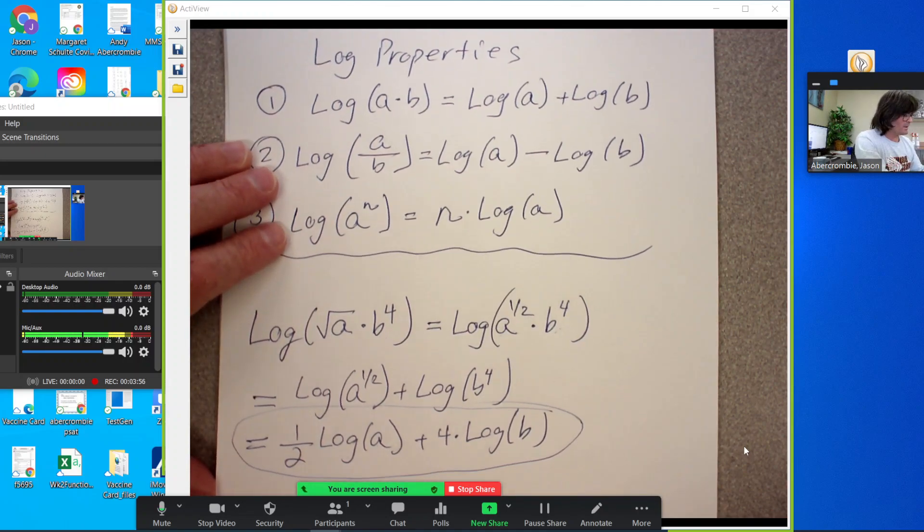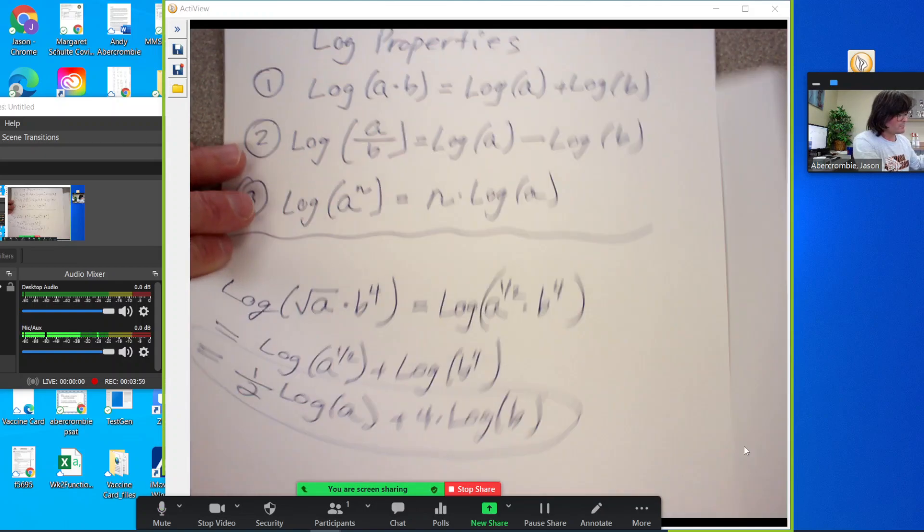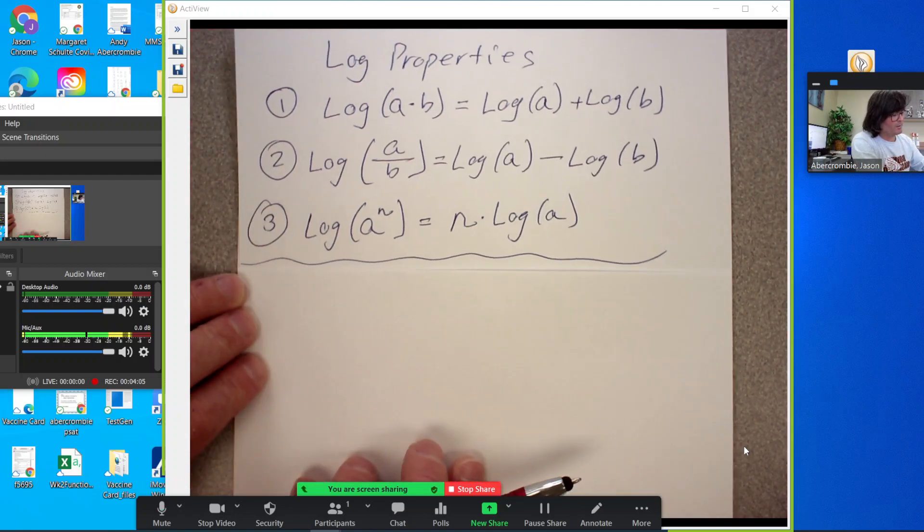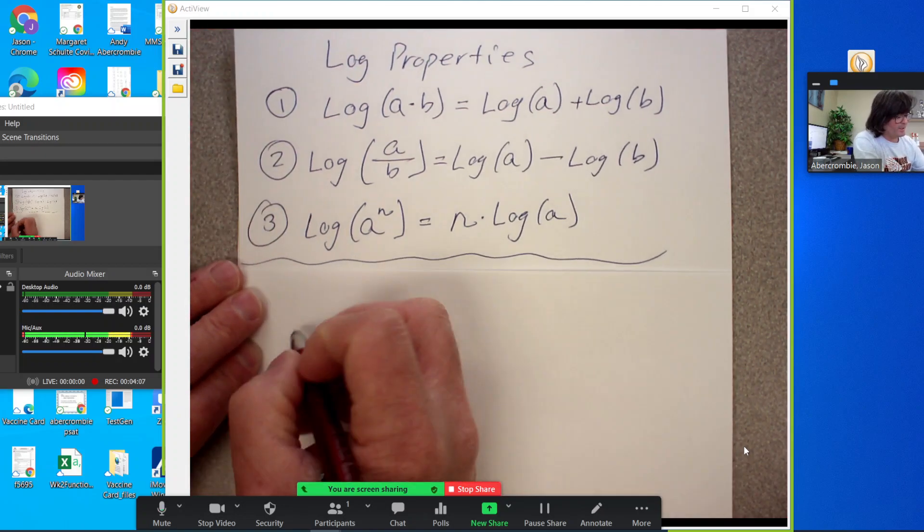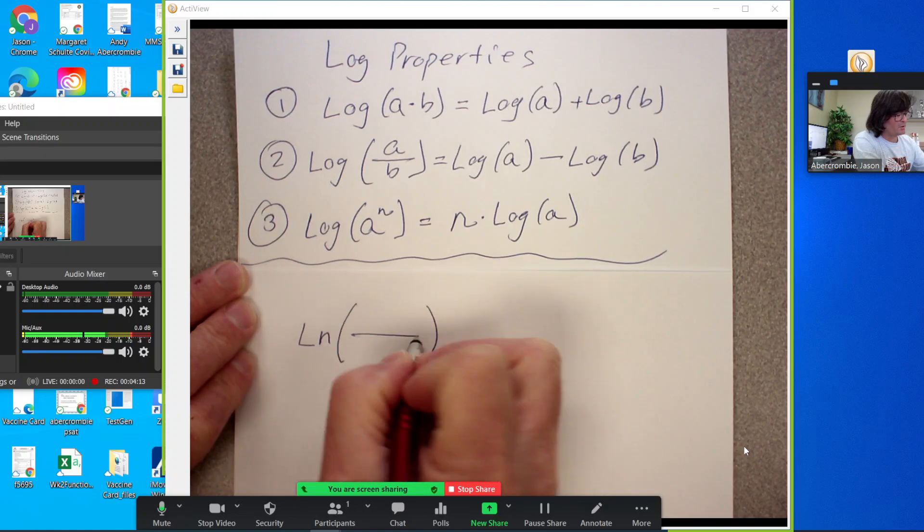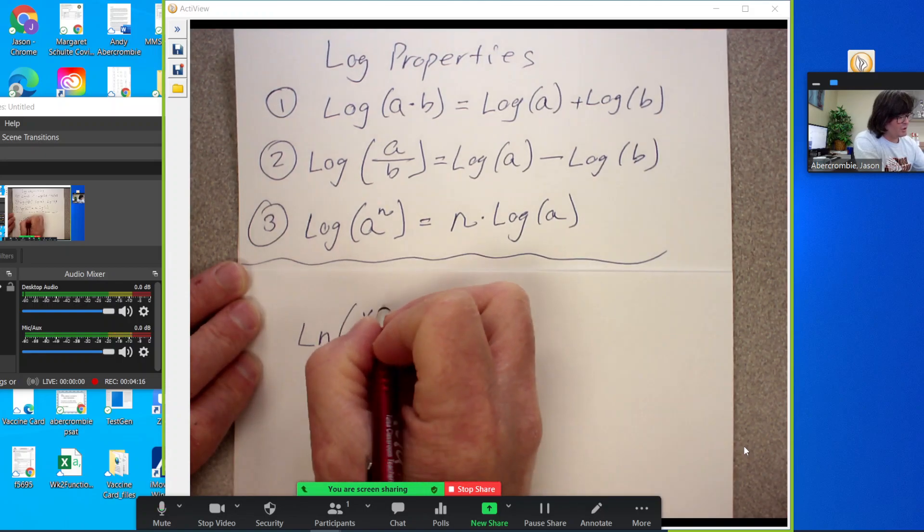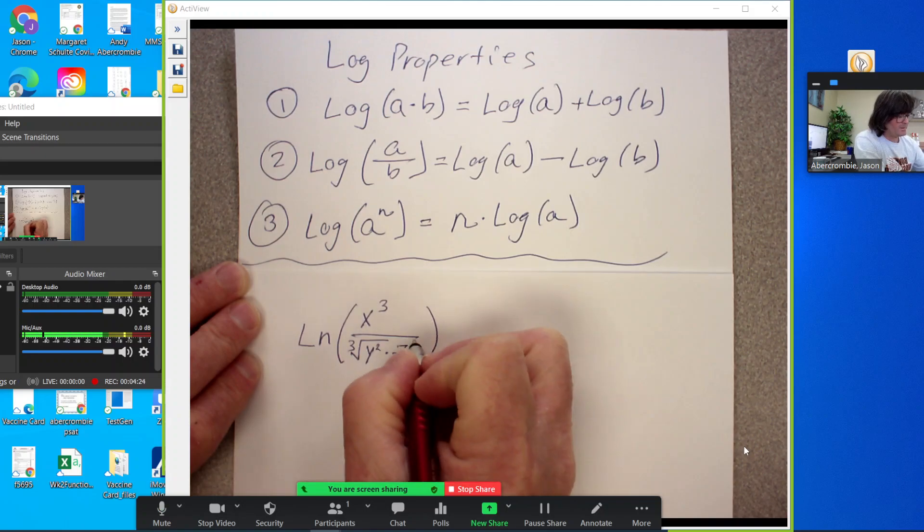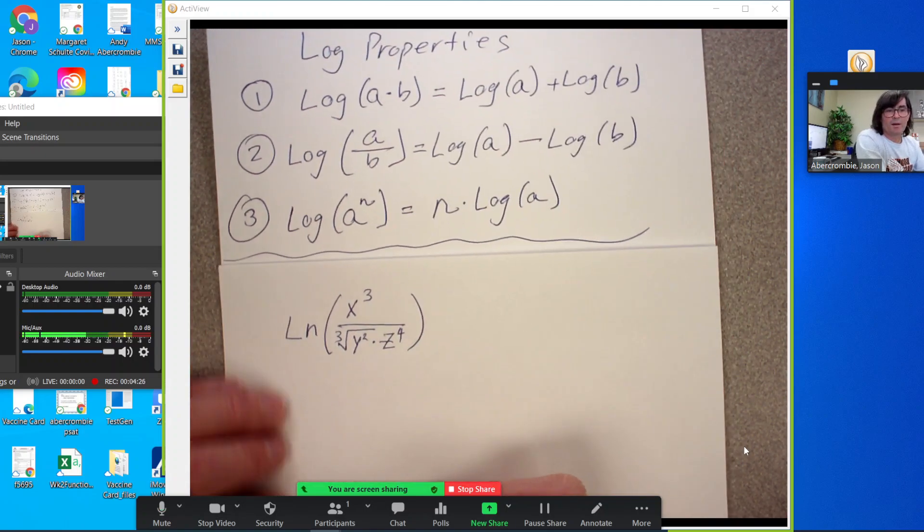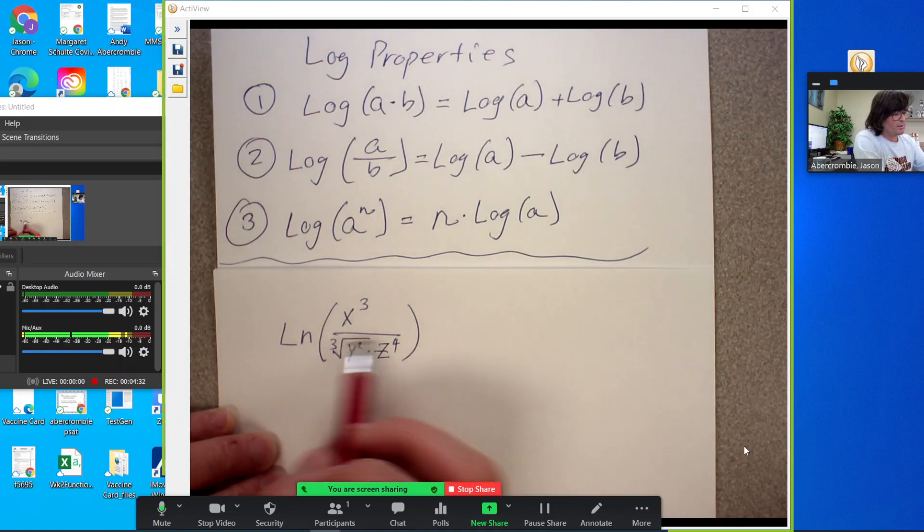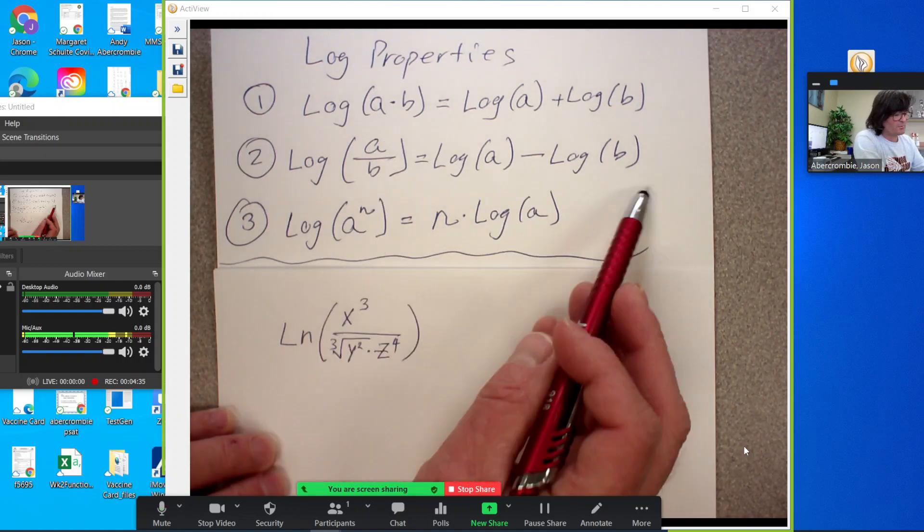So let's try another one. This time we'll expand. We'll do a fraction. We'll do natural log this time. Everything works the same for natural log. X cubed. And then we'll have the cube root of y squared times z to the fourth. The first issue here is the subtraction.